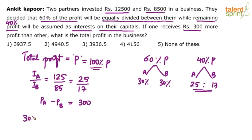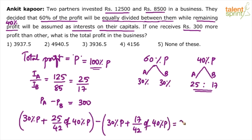So 60% is divided equally 30, 30; 40% is divided in the ratio 25 is to 17. What is the profit of A? 30% of P plus out of remaining 40%, it will get 25 parts out of total 42 parts of 40% of P, minus profit of B. B will also get 30% of profit plus 17 parts out of total 42 parts out of this 40% profit. This equals 300.